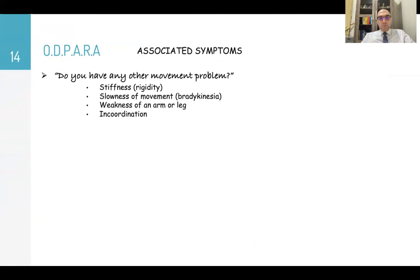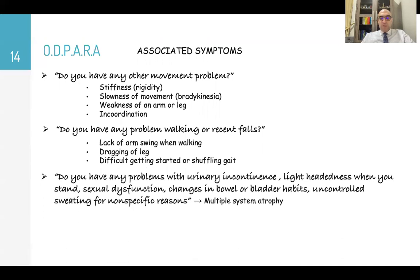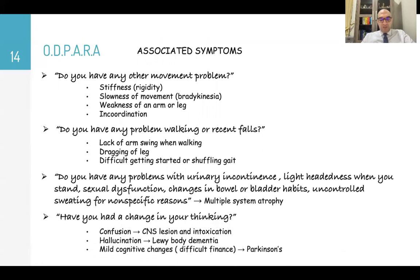For associated symptoms, ask about other movement problems like stiffness, slowness of movement, weakness of arms or legs, or incoordination. Ask about walking problems or recent falls, lack of arm swing when walking, dragging the leg, difficulty getting started, or shuffling gait — all suggesting Parkinson's. Ask about urinary incontinence, lightheadedness on standing, sexual dysfunction, changes in bowel or bladder habits, or uncontrolled sweating — all suggesting multiple system atrophy. Ask about changes in thinking, confusion suggesting CNS lesion or intoxication, hallucinations suggesting Lewy body dementia, and mild cognitive changes or difficulty with finances suggesting Parkinson's.